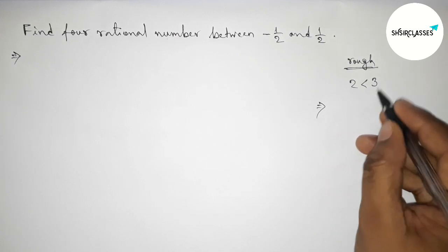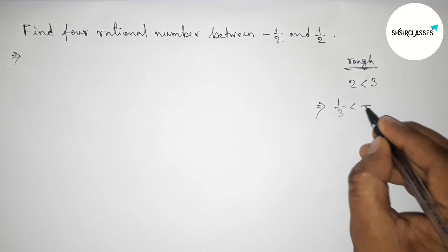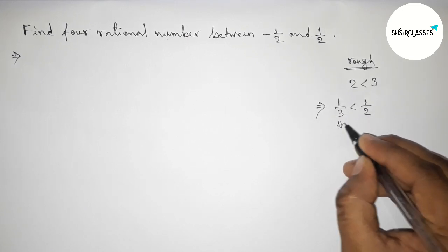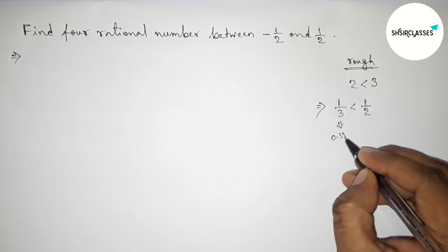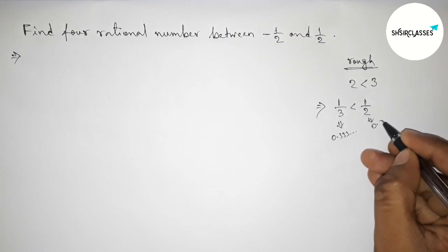Because the value of 1 by 3 is equals to 0.333 continuous, and the value of half is 0.5. So 0.5 is obviously greater than 0.333 continuous.